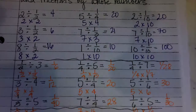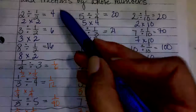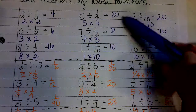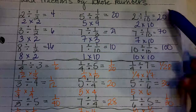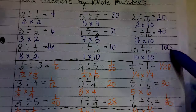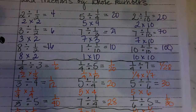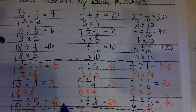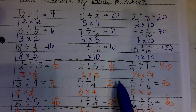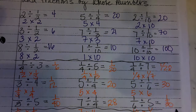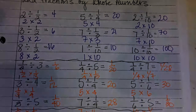Let's check our work: 4, 6, 16, 20, 21, 10, 20, 70, 100. Then we have 1/6, 1/12, 1/40th, 1/20th, 20, 28, 1/28, 30, 1/30th.